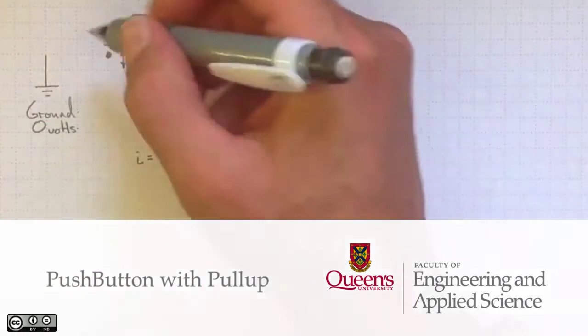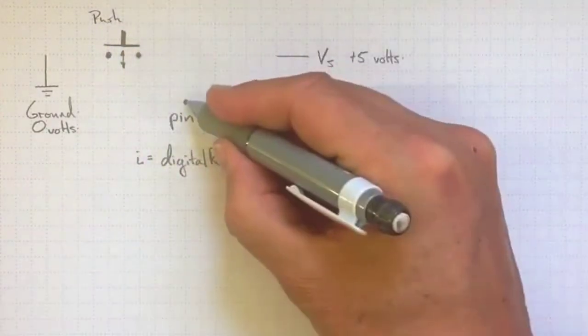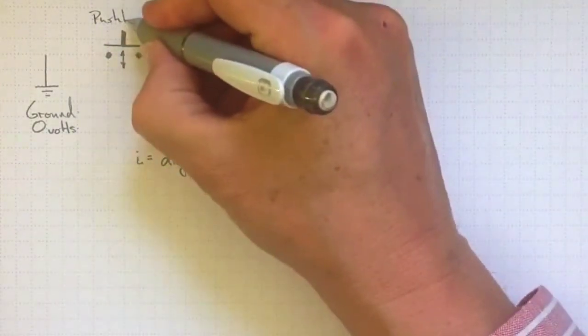If I want to read the state of a push button like this one using my digital input pin, in this case pin number 7,